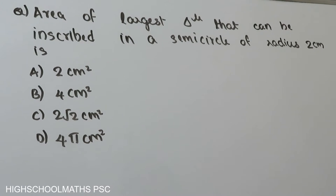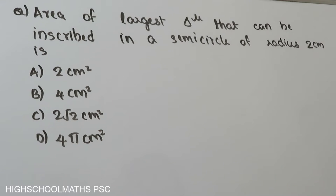The question: area of the largest triangle that can be inscribed in a semicircle of radius 2 centimeters. The answer choices are: 2 centimeters square, 4 centimeters square, 2 root 2 centimeters square, or 4 pi centimeters square.